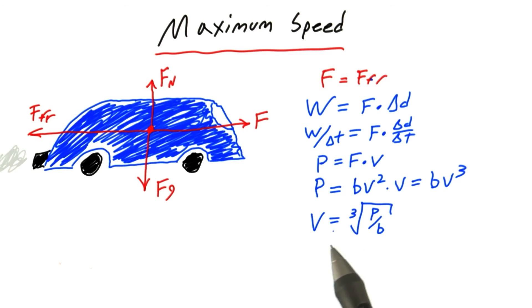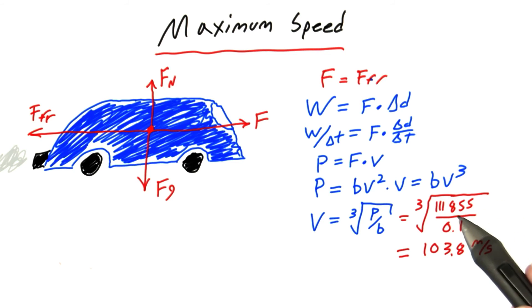And solving for velocity, we get that the velocity required to go at a constant speed at a certain power is equal to the cube root of the power divided by that constant b. And plugging in the numbers we were given, it turns out that 150 horsepower is equal to 111,000 watts. We get that the maximum speed you can go is 103.8 meters per second.